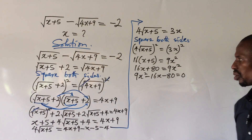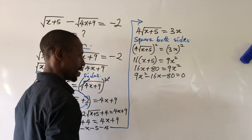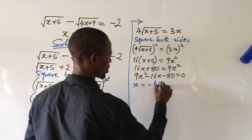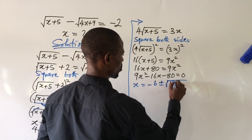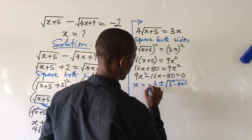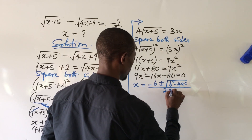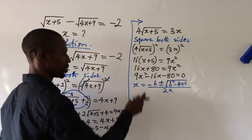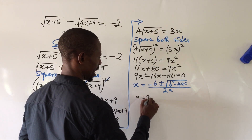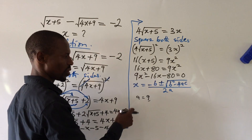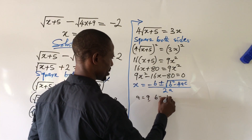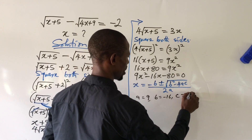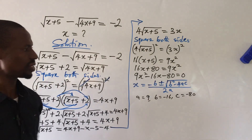This is a quadratic equation, so we solve it using the quadratic formula: x equals minus b plus or minus square root of (b squared minus 4ac), all over 2a. From our equation, a equals 9, b equals minus 16, and c equals minus 80.